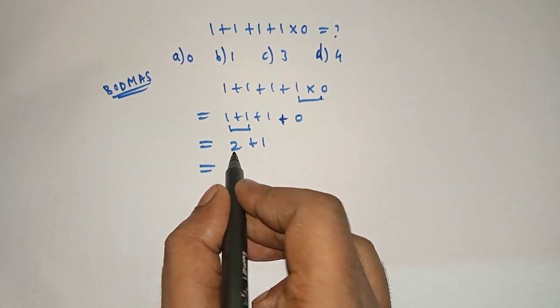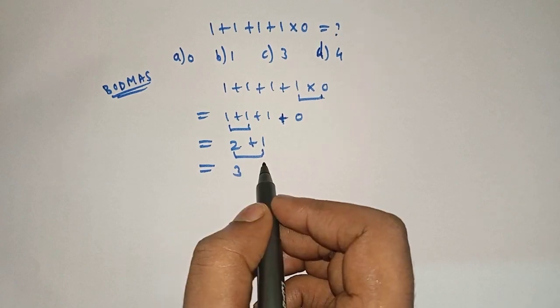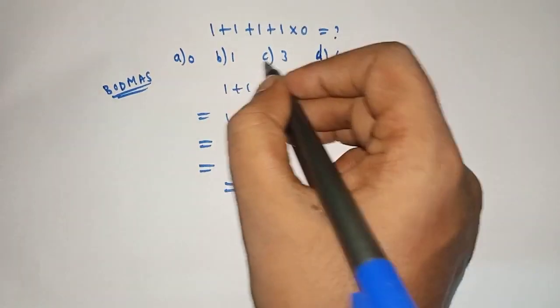Now we will solve this: 2 plus 1 is 3. Option C, which is our right answer. Option C is our right answer.